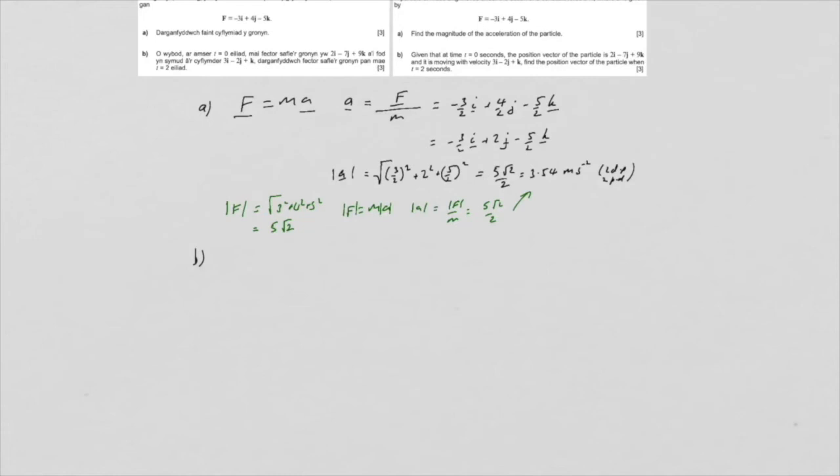An alternative method for B, which is pretty cool, is to recognise that R is the integral of V dt. So this means that R is the integral of the integral of A dt dt. So we'll start off with finding V. So V is the integral of A. Now A, we know from the start, was minus 3 over 2i, plus 2j minus 5 over 2k dt.